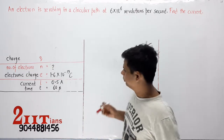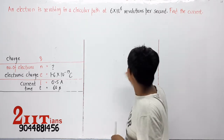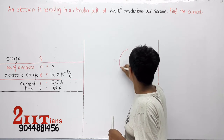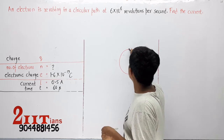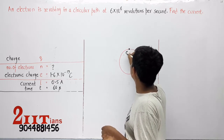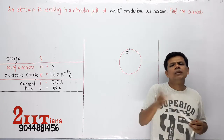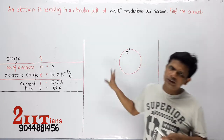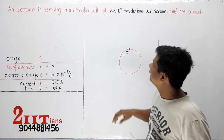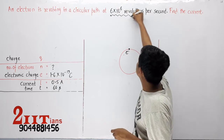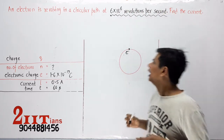Equivalent current flowing in a loop — पहली बात यह समझो कि circular path में इतने electrons जा रहे हैं, तो कोई भी atom हो सकता है। इससे मतलब नहीं है। आगे कुछ सवाल ऐसे लेंगे जहाँ वही logic लगेगा — तो देखो यार, यह number बहुत ही large number है, बहुत ही fast है।